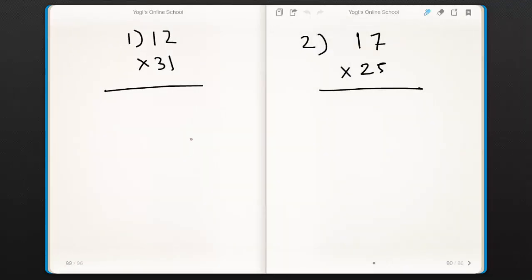Let's jump into first example. 12×31. First we have to multiply last digits of both numbers, that is upward multiplication. 2×1 is 2.